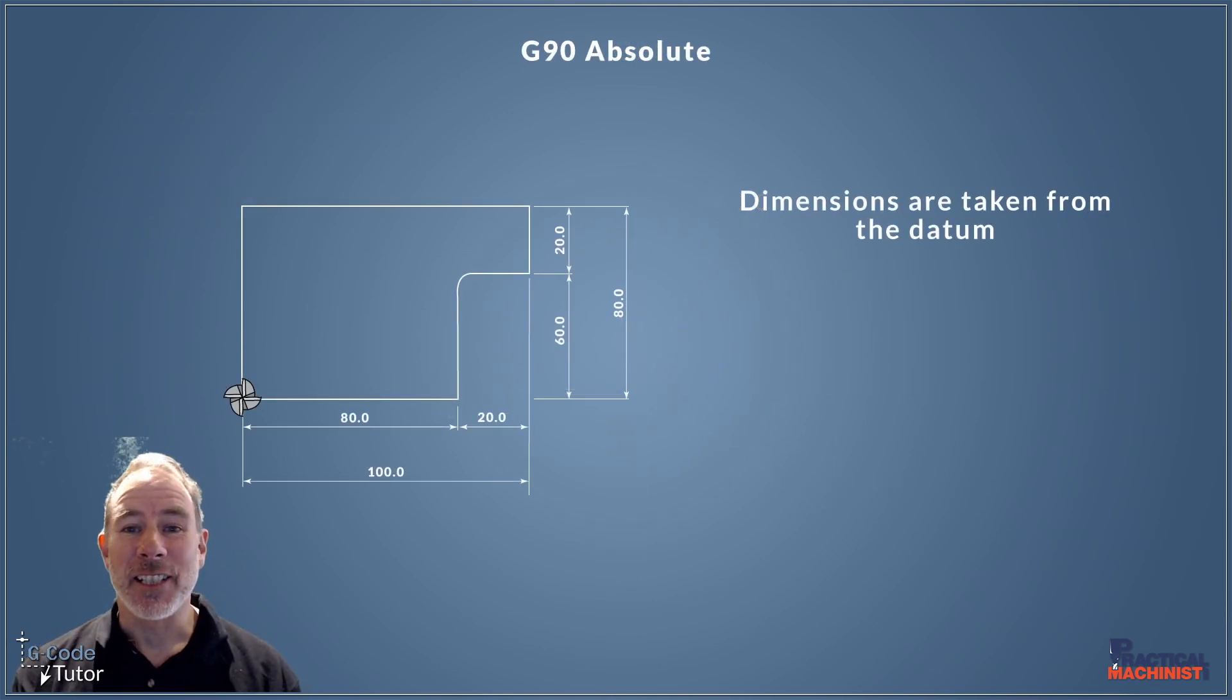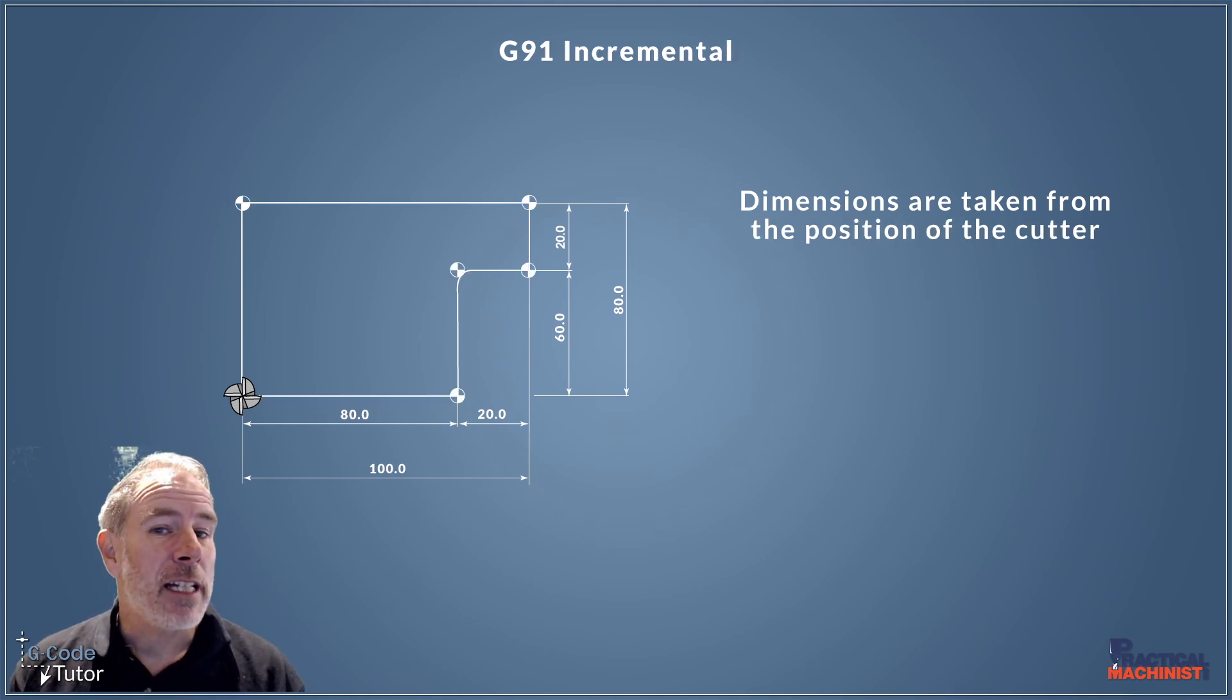Okay, so so far we've been doing everything in G90 absolute mode. So what this is, it means all our dimensions stem from the datum position. So every time we give a dimension, we take the 0 point of our datum position and then we plot those points from that position, the same as we just did with our graph. So that's G90 absolute. That's what we've been programming in so far, but we can also program in G91 incremental. Now the differences between absolute and incremental is when we're programming in incremental, it takes the last known position of our tool or cutter as 0. So all our dimensions stem from the last known position of the cutter and not the 0 datum position that we set with our machine.